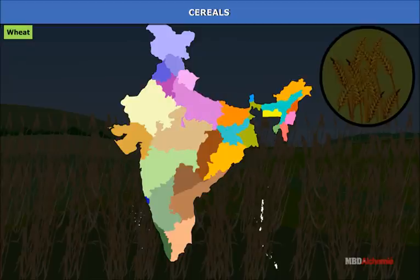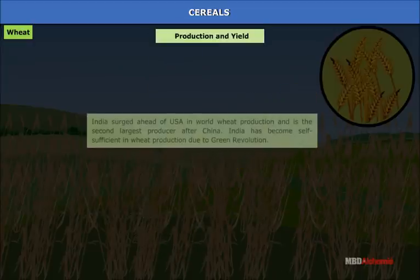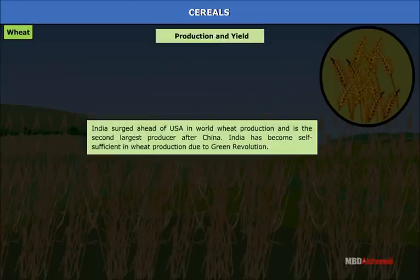Wheat is also grown in Madhya Pradesh, some parts of Bihar, Rajasthan, Gujarat and Maharashtra. India surged ahead of the USA in world wheat production and is the second largest producer after China. India has become self-sufficient in wheat production due to the Green Revolution.